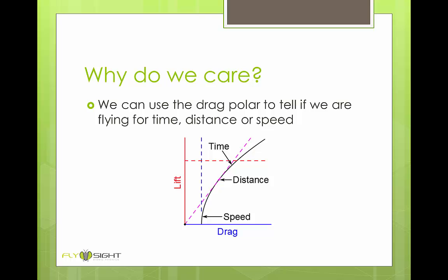So why do we care about this? We can use the drag polar to determine if we're flying for time or distance or speed. If we take a single moment in a jump, we can calculate lift and drag at that point. Based on where the point is in this plot, we can tell what mode of flight we're in.